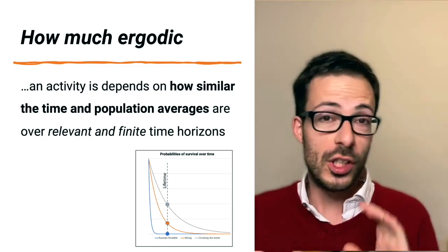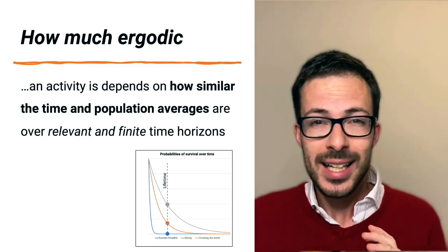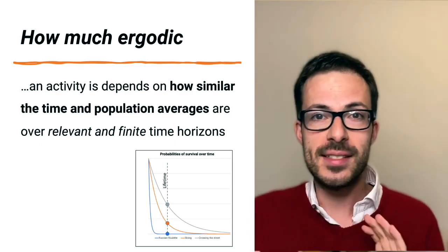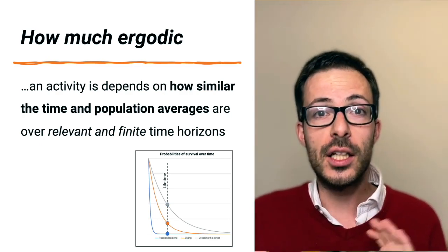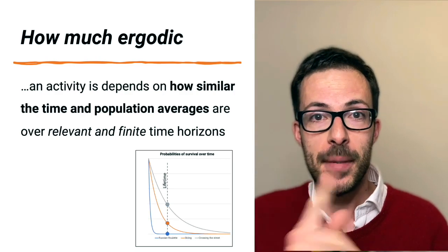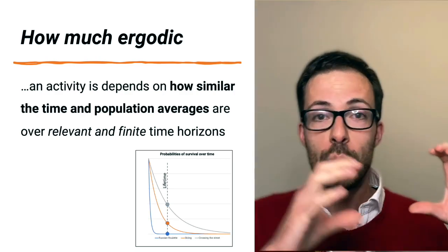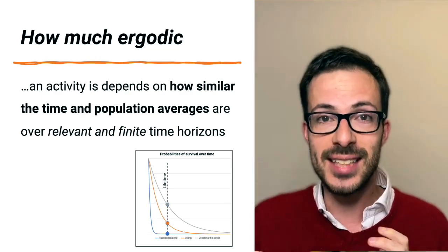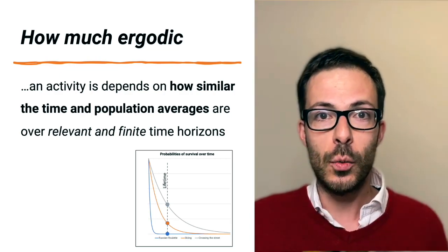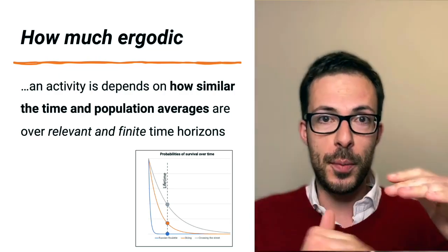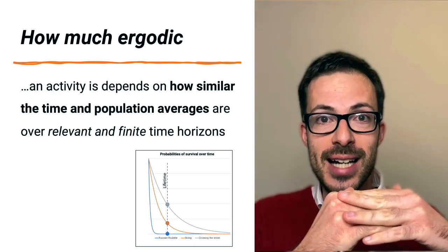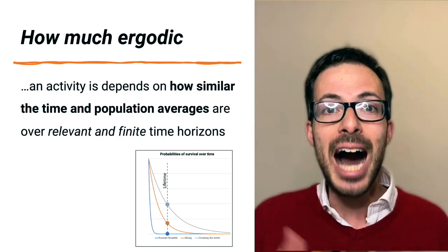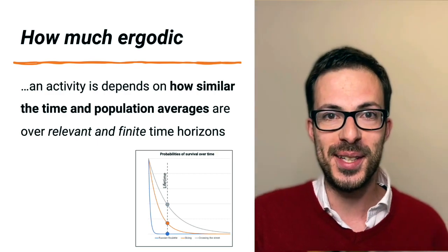So for all practical concerns, it never makes sense to check whether an activity is ergodic over an infinite time frame, but it makes much more sense to look at finite time frames. We need to first ask ourselves, what is a relevant time frame? And then we can compute time average, population average, check how different they are. And based on that, we can say how much ergodic an activity is.